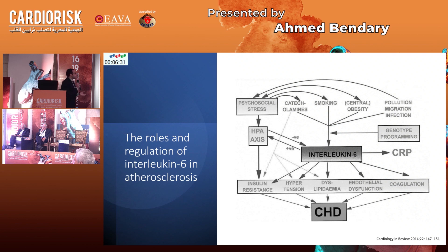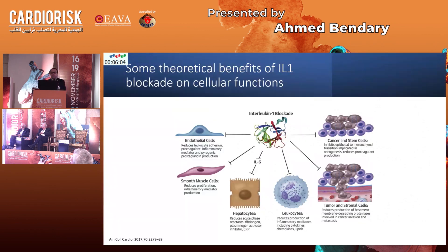It goes without saying that the active player in the inflammatory process is interleukin-6. Interleukin-6 can enhance the hypothalamic-pituitary axis, and this in and of itself can lead to more stress, more obesity, more insulin resistance, with the known pathological downstream cascade of this process. So it makes full sense that if we could stop the sensors of interleukin-1, or at least block its action through antibodies, we can obtain many beneficial effects over endothelial cells, smooth muscle cells, even hepatocytes, acute phase reactants, and even on carcinogenesis and tumorigenesis.